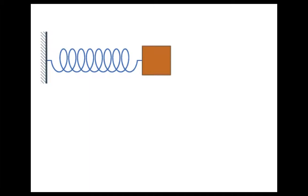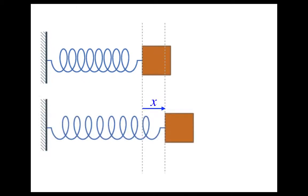To begin with, we're going to consider the mass at two different positions. First, at its unstretched or equilibrium position — this is when the mass is attached to the spring and the spring is not stretched at all. And then in the bottom picture, we have shown the mass at some other position where the spring is stretched a little bit.